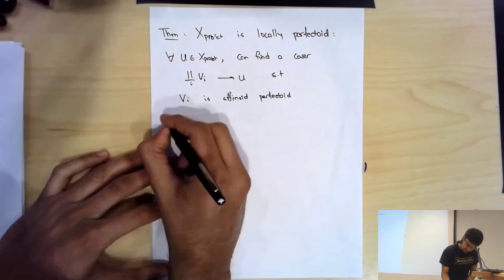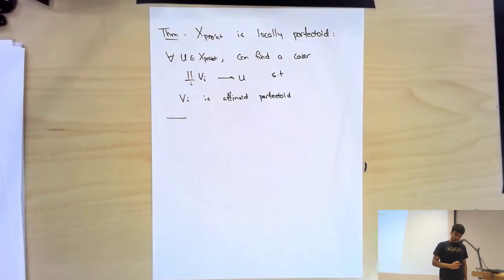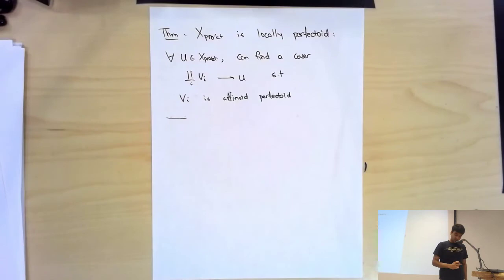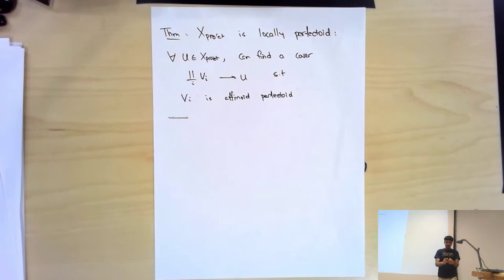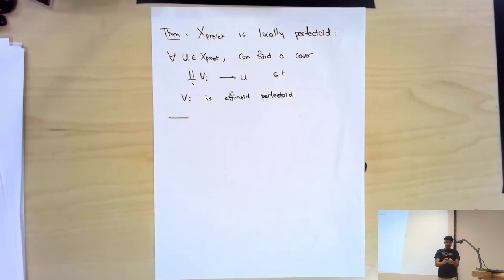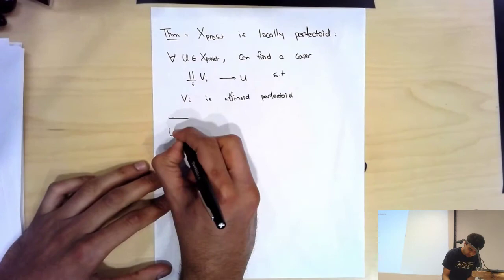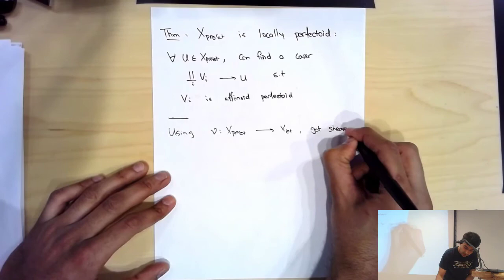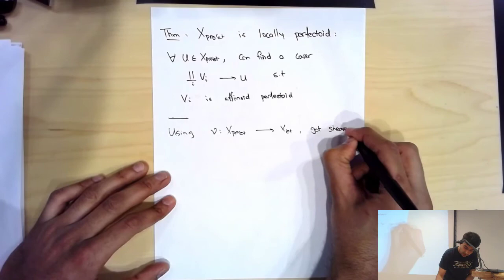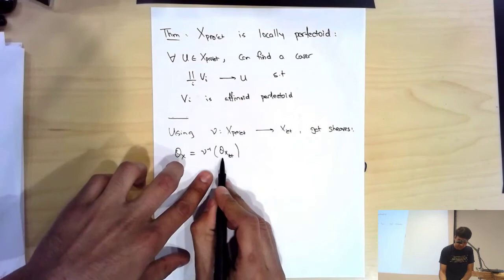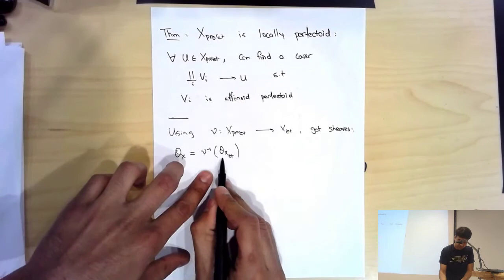Let's continue the discussion about X_{pro-ét}. I've explained why the site is locally perfectoid and given some idea of what the objects look like, but I haven't talked about sheaves. Using the map ν: X_{pro-ét} → X_{ét} — which just says to regard an étale morphism as a pro-étale morphism — you get certain sheaves. O_X (without decorations) is ν^* of the structure sheaf O_{X,ét}. Then Ô_X is a completion: you pull back O_X^+ rather than O_X, complete it p-adically, and then invert p.